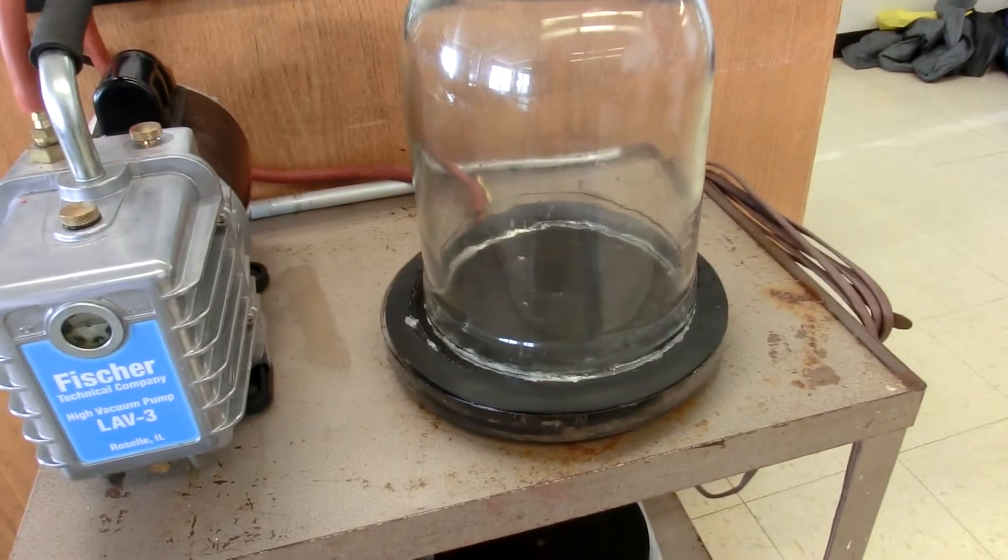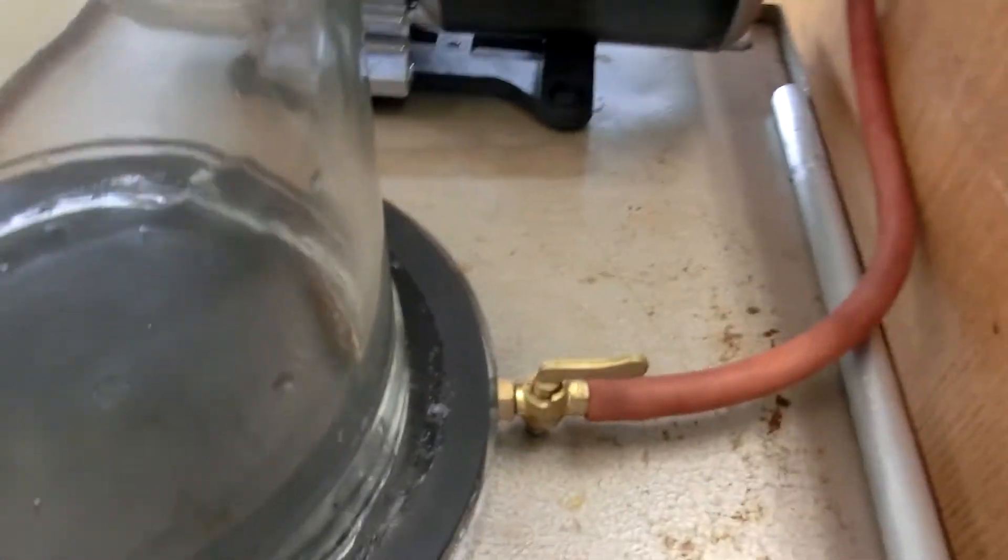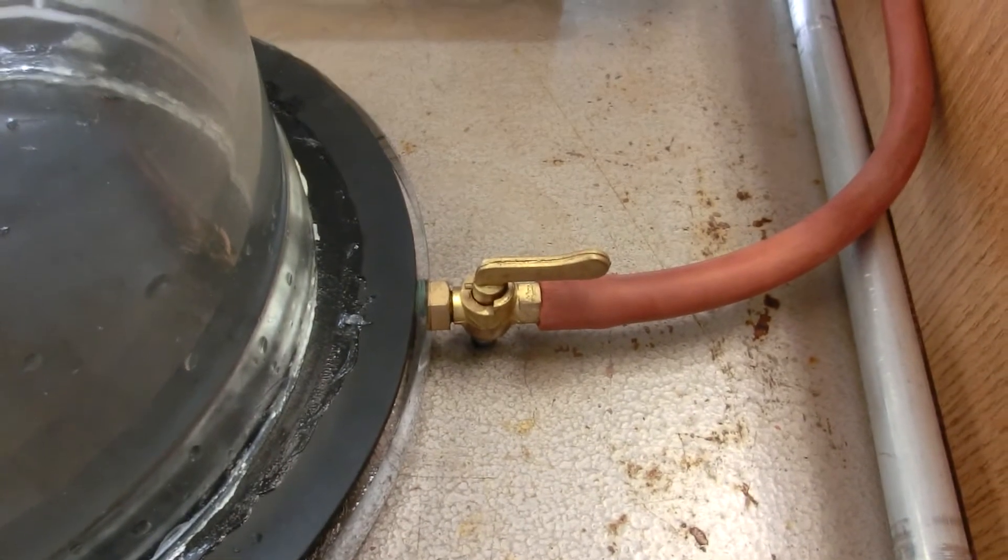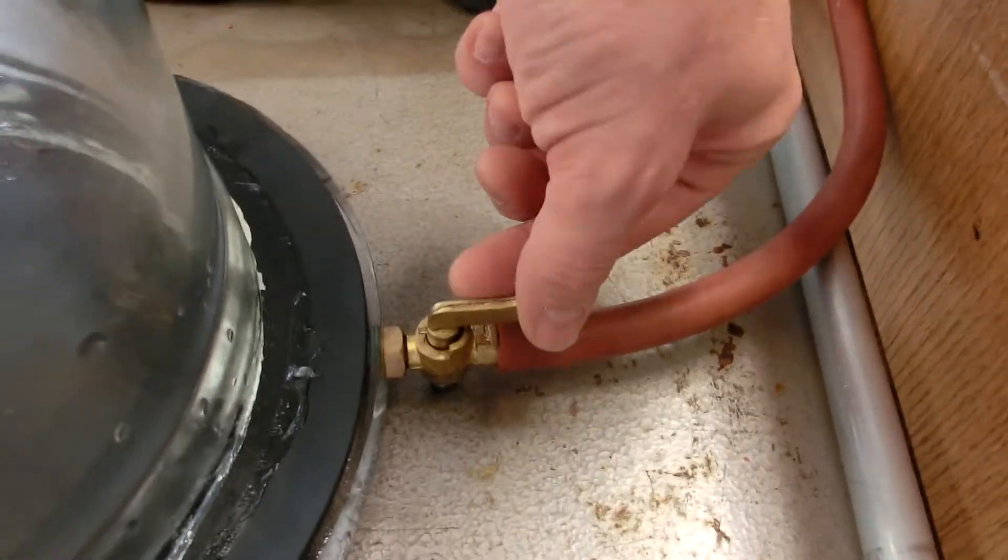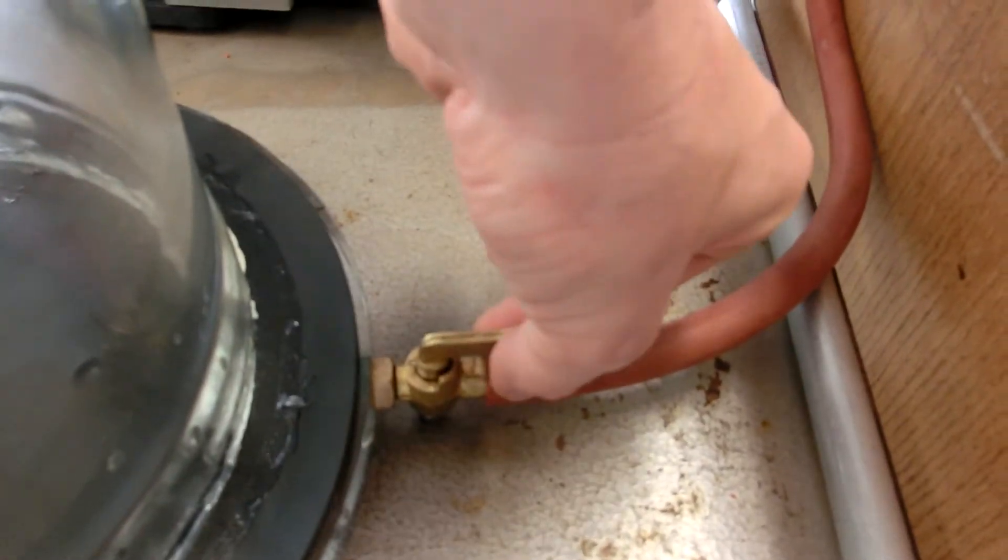And we have a bell jar set up. Let's take a look at the bell jar itself. You'll notice that the platform that the bell jar is on has a 90-degree valve. Like this it's going to be open, like that it's going to be closed. I'm going to leave it open for right now.